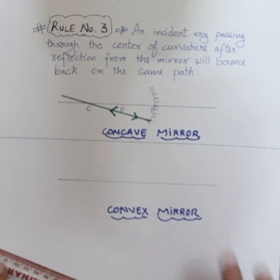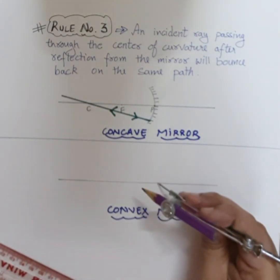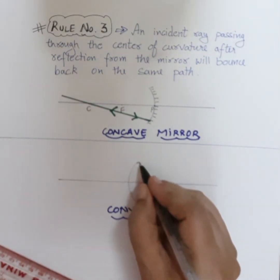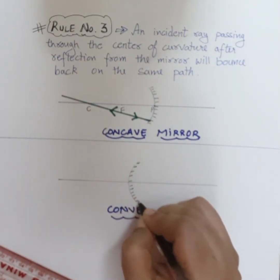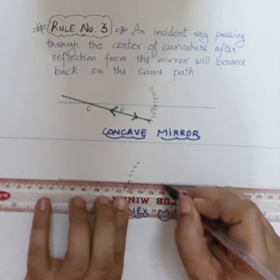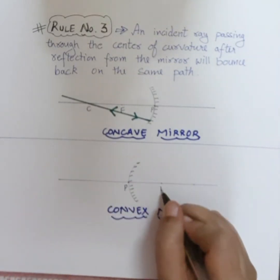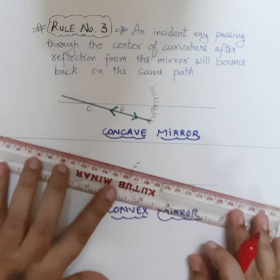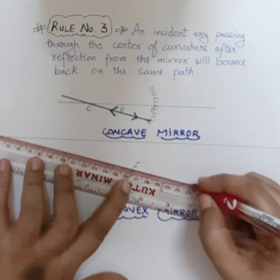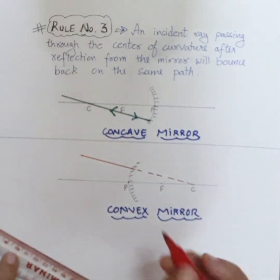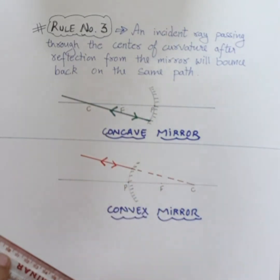Now for the convex mirror also, draw a principal axis and the convex mirror shape. The outer side is reflecting and the inner side is polished. This is the pole. Measure three centimetres from the pole to mark F as focus and C as centre of curvature. Any ray which passes through the centre of curvature - behind the mirror we show dotted lines, and in front it goes straight - will be bounced back on the same path.